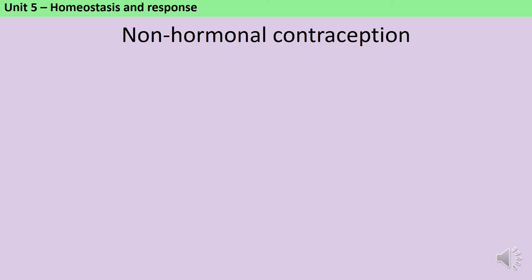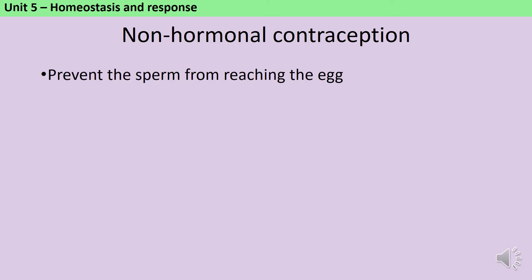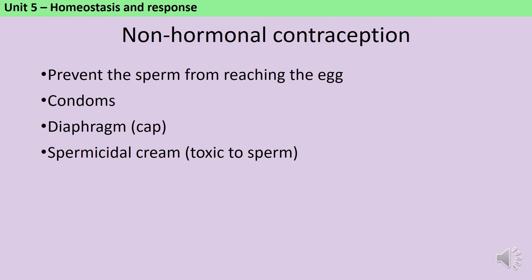There are also non-hormonal contraceptives, which may be preferable if you experience side effects like headaches from hormonal methods, if you have an underlying health condition which interacts with the hormones, or if you're worried about sexually transmitted infections — because a hormonal contraceptive will stop you getting pregnant but it won't protect you from STIs. Non-hormonal contraceptives prevent conception by stopping the sperm from reaching the egg. They include barrier methods like condoms and femidoms, and also the diaphragm or cap which is inserted into the vagina before sex. Both of these methods are often used together with a spermicidal cream, which is a cream that can kill sperm.